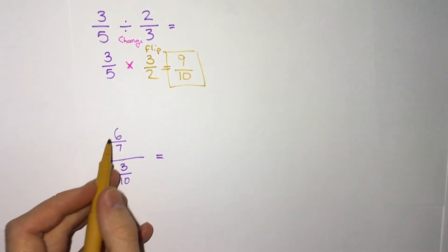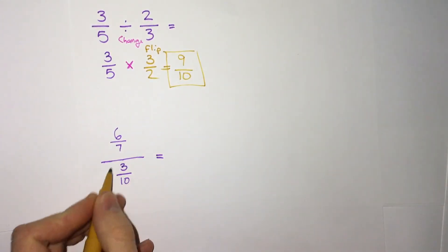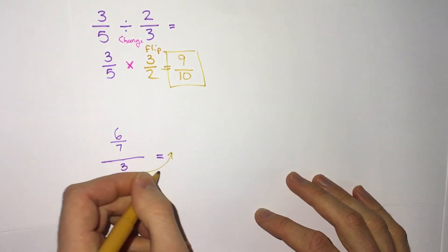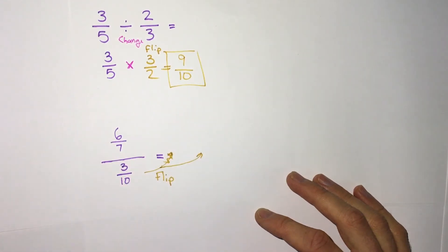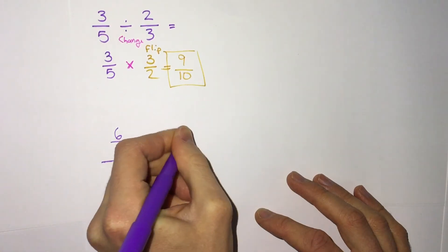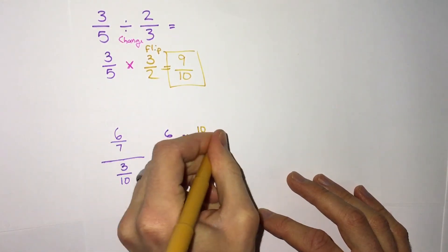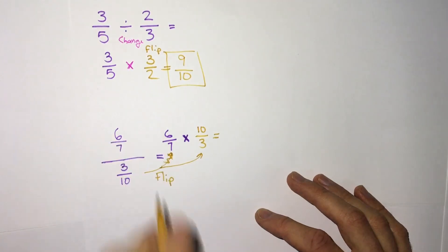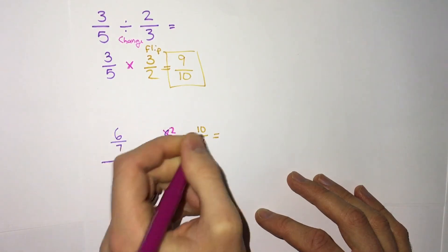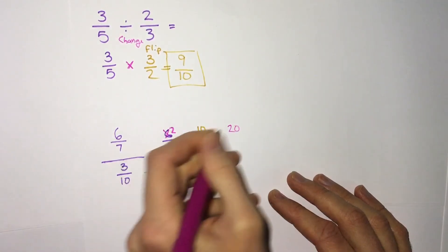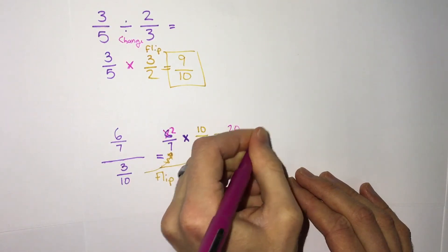Another way division of two fractions might be written is as a big fraction — for example 6 sevenths over 3 tenths. The second fraction is what we're dividing by, so we do the same thing: take the top fraction, 6 sevenths, change it to multiplication, and flip the second fraction to become 10 over 3. One thing cancels: 6 and 3 — 3 goes into both — so divide those by 3 to get 2 and 1. Then 2 times 10 is 20 and 7 times 1 is 7, giving us 20 sevenths, or 2 and 6 sevenths.